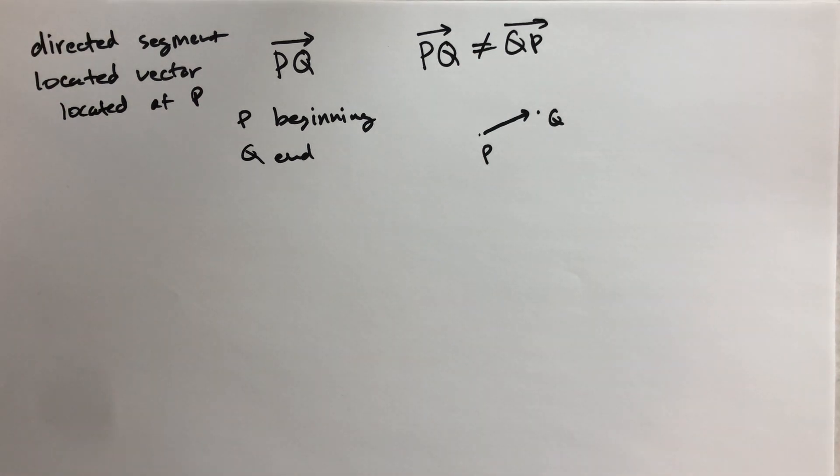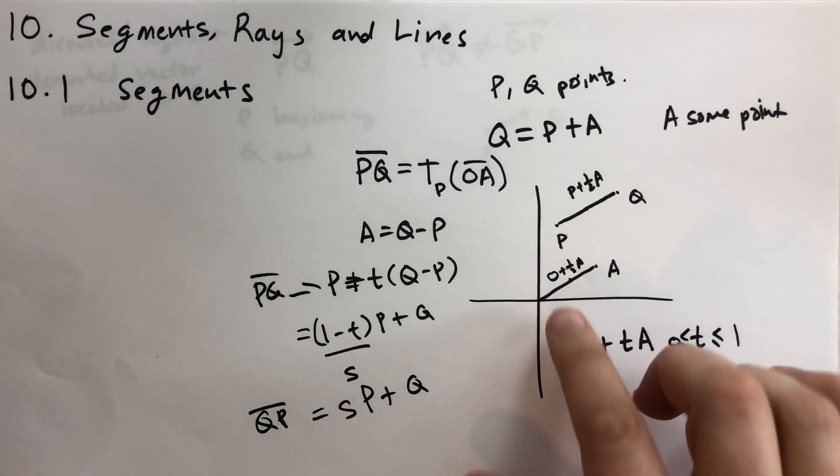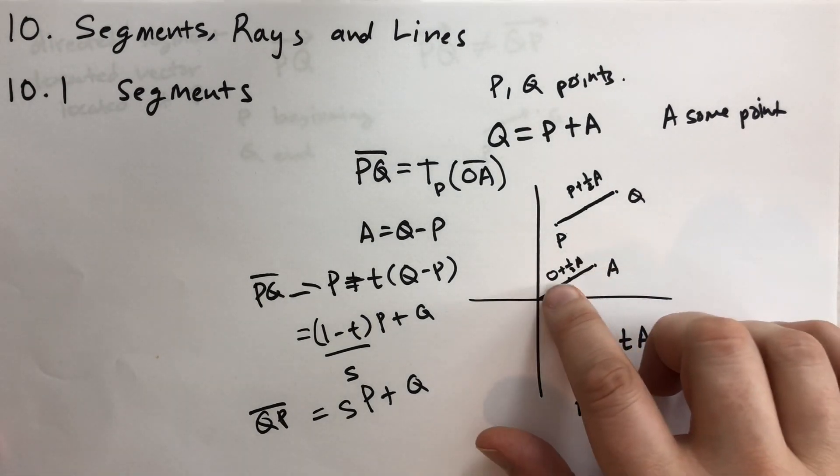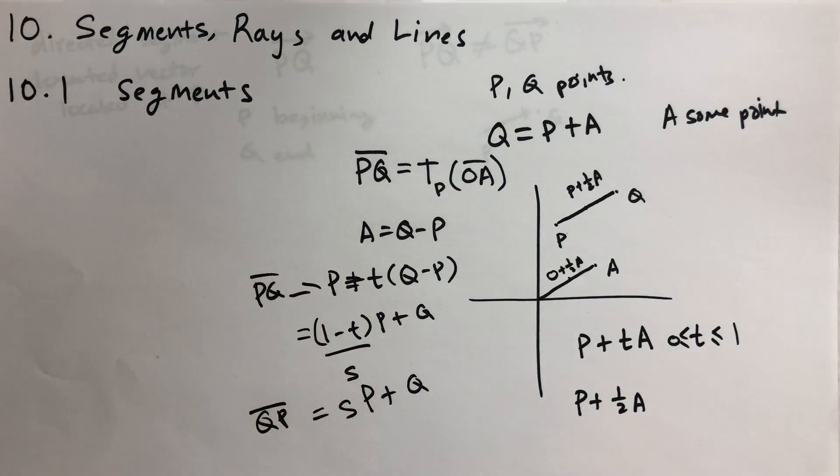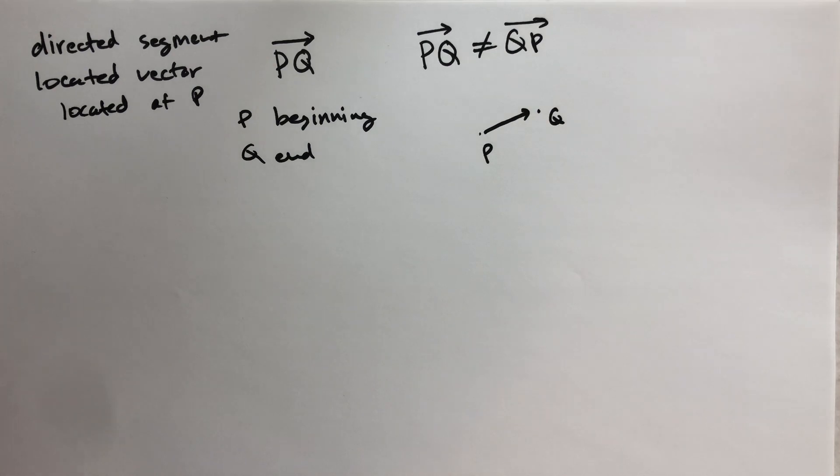That's pretty much all there is for the first section. It's a pretty simple section. I don't know if there's much to wrap your head around other than we can move from point P to point Q by taking the difference between the two and adding a real number between zero and one times that. That's pretty much all there is to it. Thanks for watching, I hope you enjoyed this. I'll catch you next time. Take care and bye-bye.